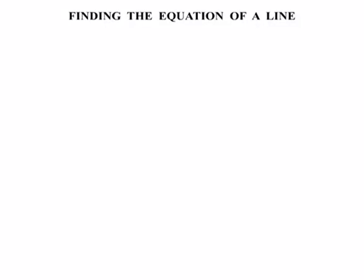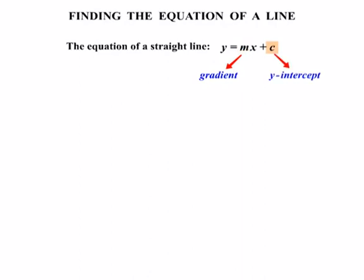In this lesson, we're looking at finding the equation of a line. The equation of a straight line uses the formula y equals mx plus c. The letter m represents the gradient, or the slope of our line. And the letter c represents the y-intercept of the line, or where the line cuts through the y-axis.